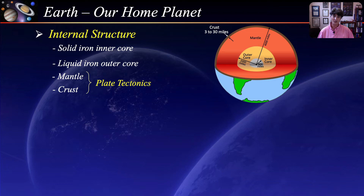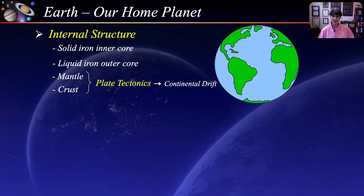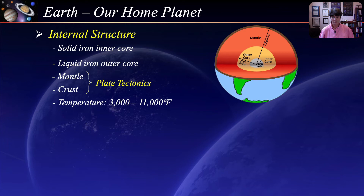The prime example of continental drift are the land masses of South America and Africa — they look like two pieces of a puzzle that were once together and then slowly drifted apart. The internal temperature of the Earth increases with depth, going from approximately 3,000 degrees Fahrenheit at the upper mantle to 11,000 degrees Fahrenheit in the core. Most of the internal heat comes from the decay of naturally radioactive elements, with some also coming from heat impact and compression when the Earth was forming.